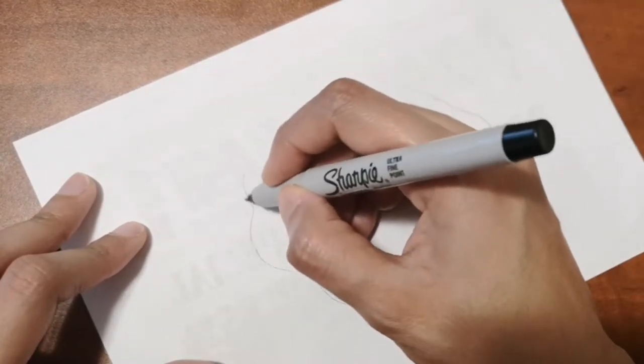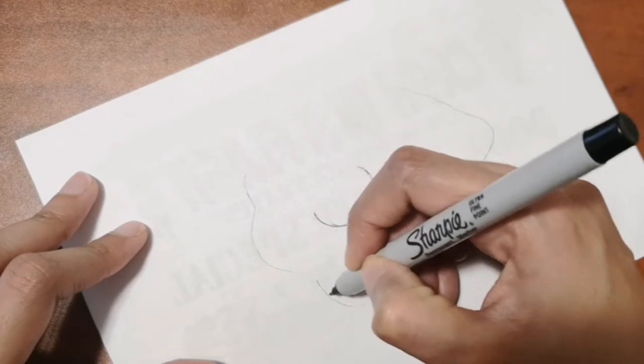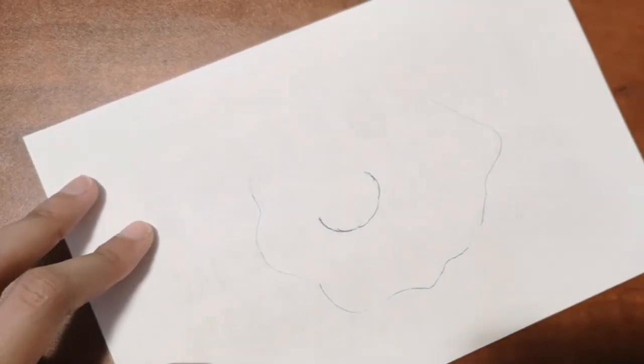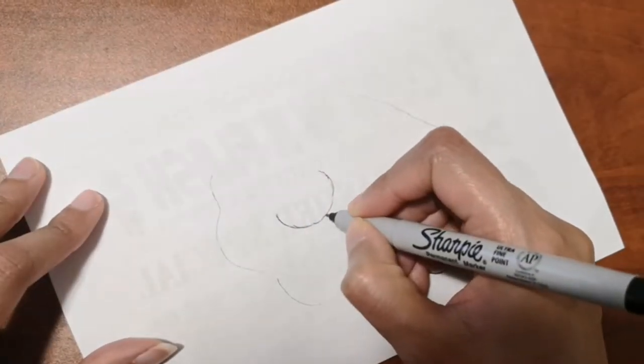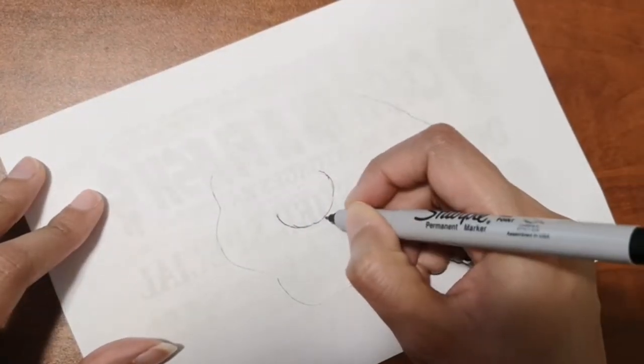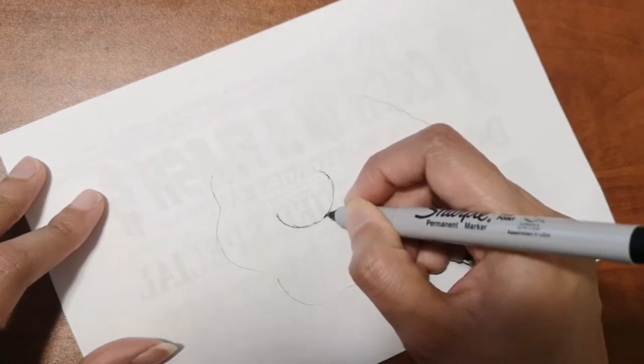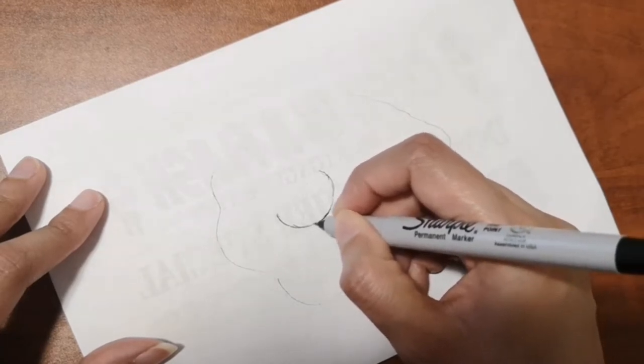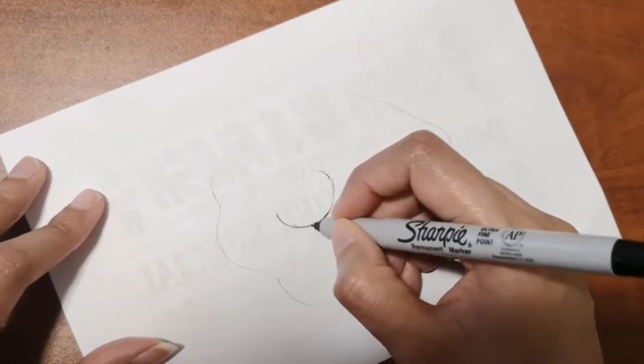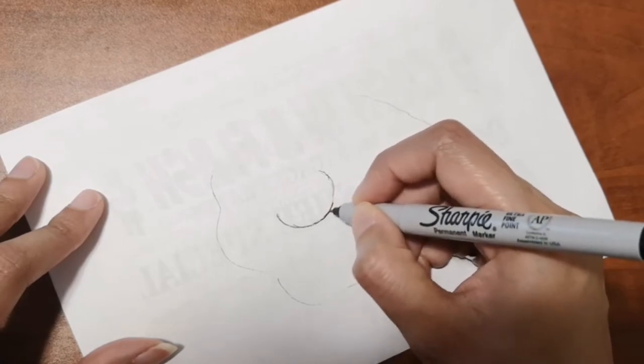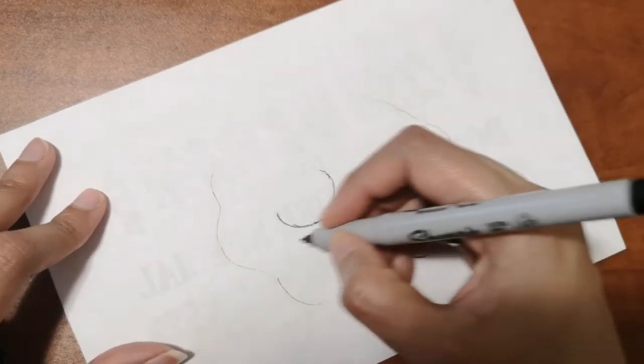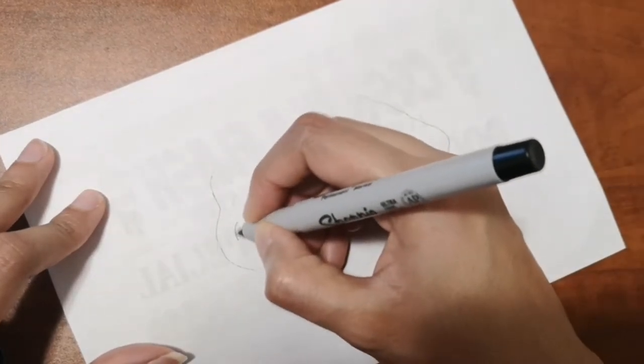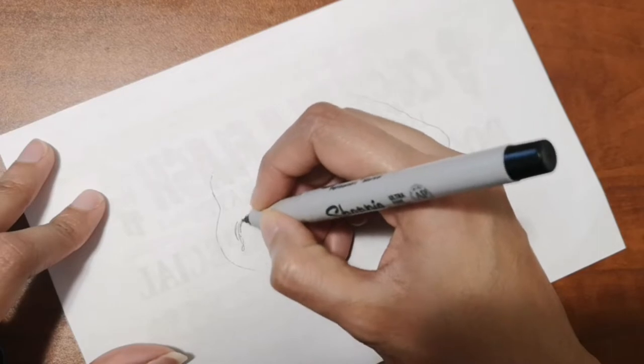I'm going to use color pencils for this one. If you want good quality color pencils, check the description box below for links. As you see with the sharpie, I drew like a half circle and the shape of a fried egg.